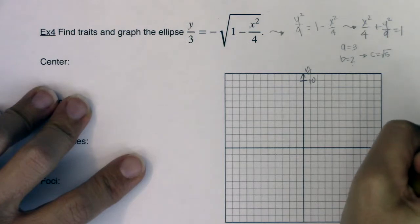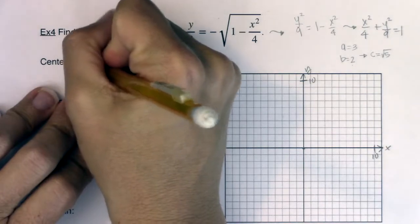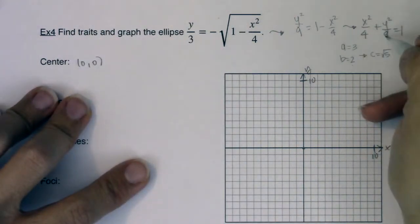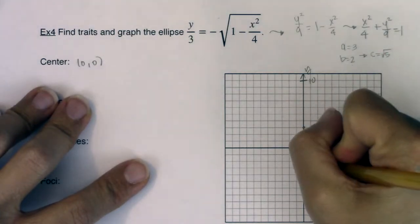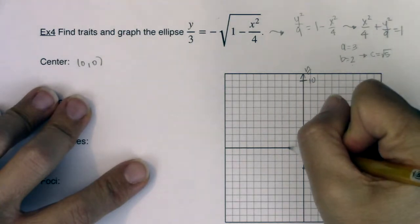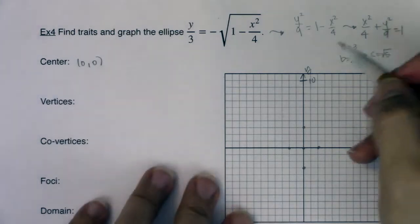So go with me. I'm going to start to graph this, and we'll see, hopefully it'll gel a little bit more what I'm trying to say here. So I'm going to go 10 and 10. I can see that the center is still the origin. So I'm going to go 0, 0. I see that a is 3, 3 goes with the y, so I'm going to go up and down 3, 1, 2, 3, 1, 2, 3. I see b is 2, so I'm going to go left and right 2.